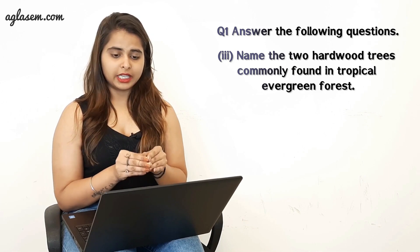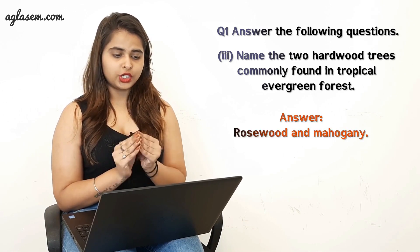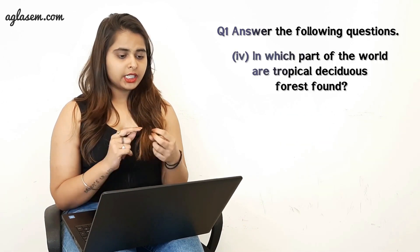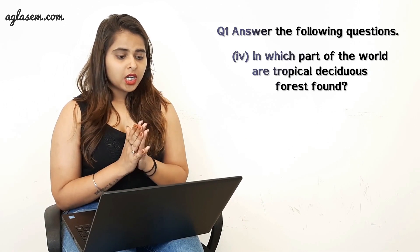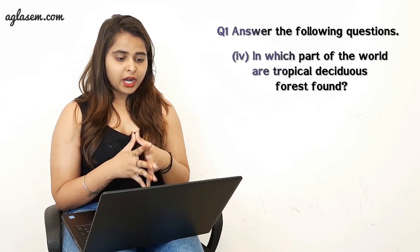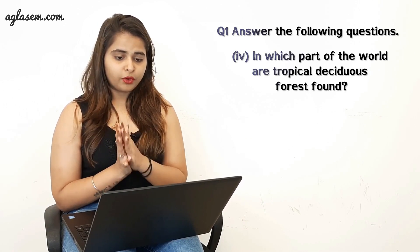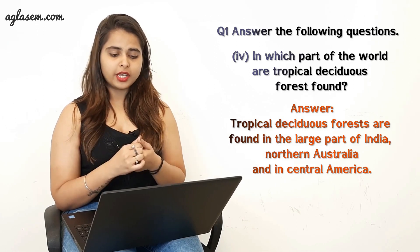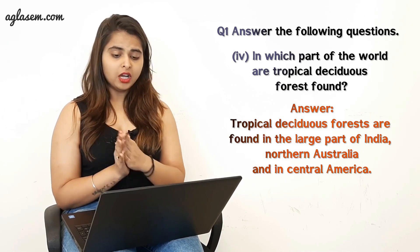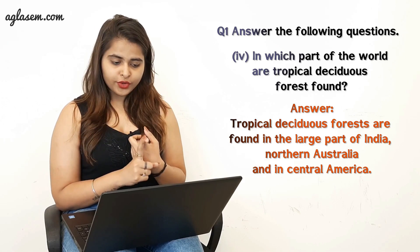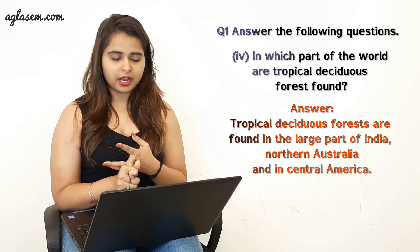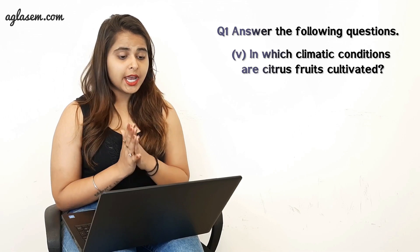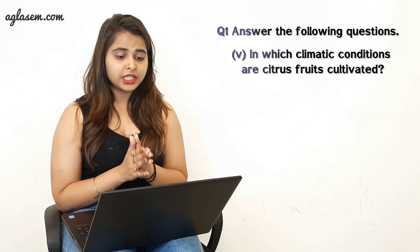The third part asks: name two hardwood trees commonly found in tropical evergreen forests. The answer is rosewood and mahogany. The fourth part asks: in which part of the world are tropical deciduous forests found? Tropical deciduous forests are found in large parts of India, northern Australia, and in central America.